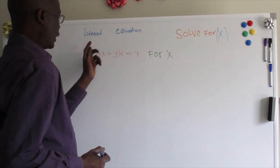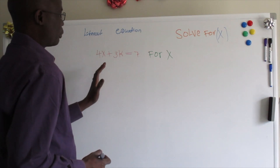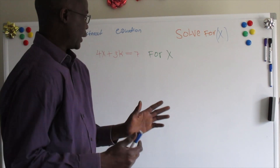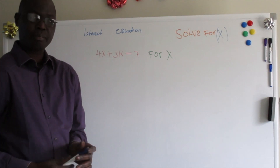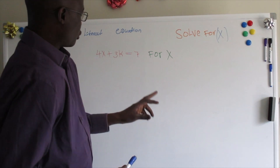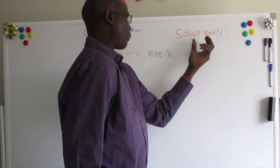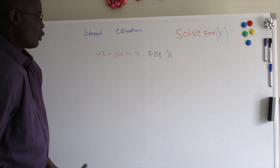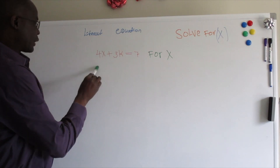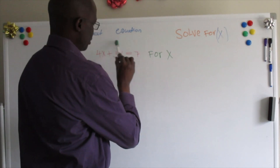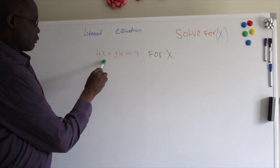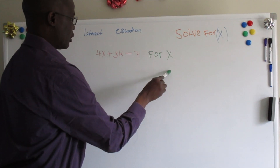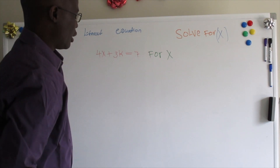That means we have a different variable, so there's no way we can solve it in the regular way we used to find the value of x. The question here is to solve the equation for x — meaning we're going to find the value of x. We have 4x plus 3k equals 7, and we're going to solve it for x.